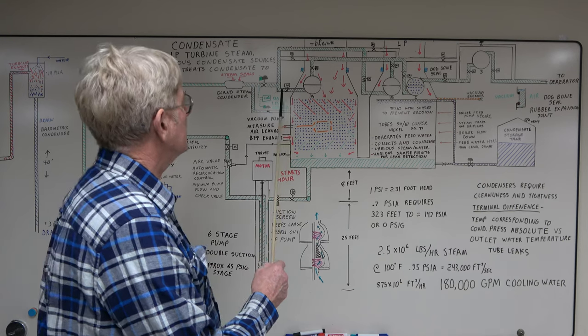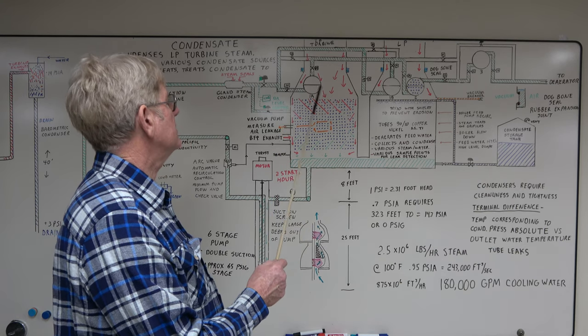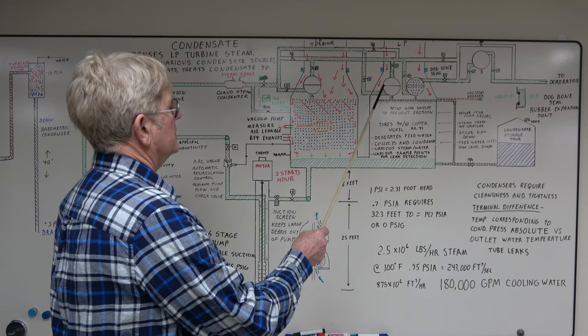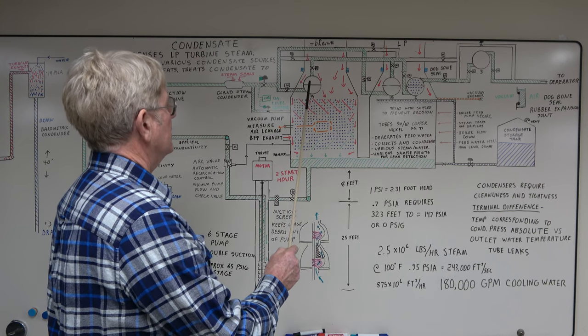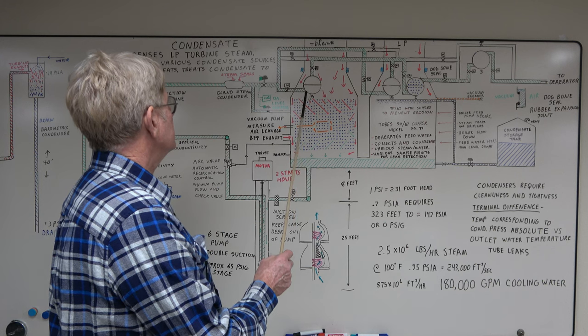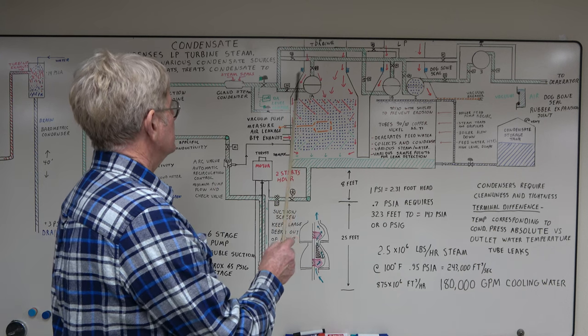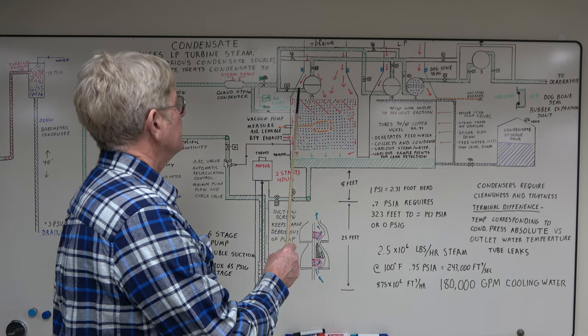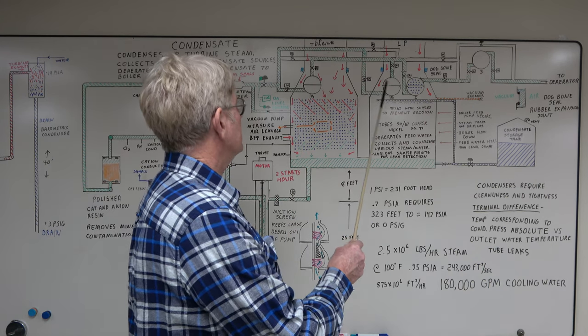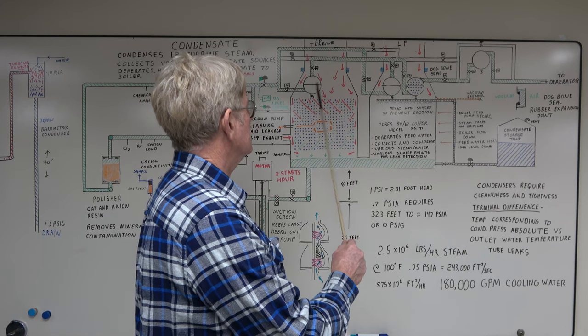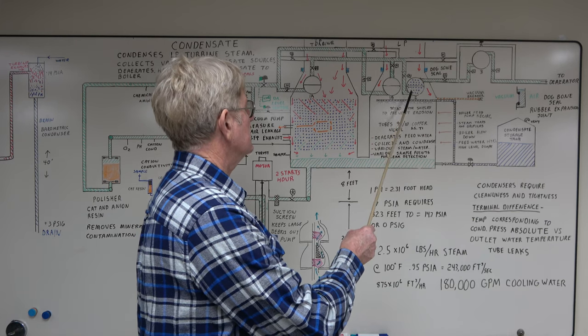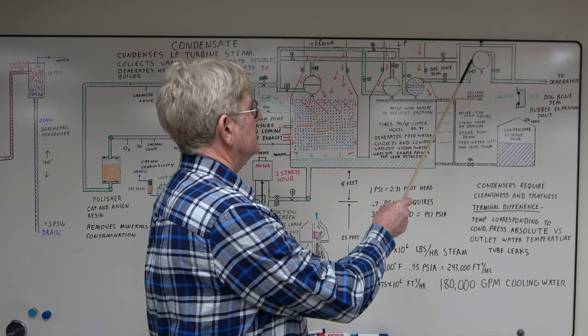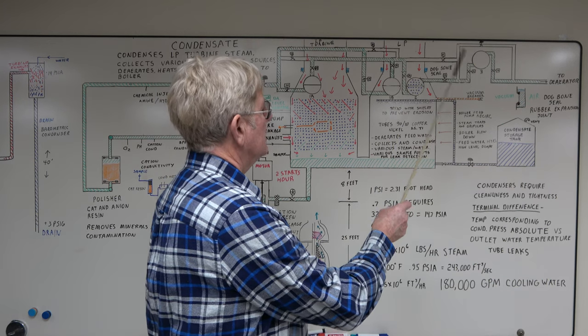From here, it goes to the low pressure feed water heaters. These are condensing steam from the low pressure turbines. These three are actually inside the shell of the condenser. You got one A, one B. These two come off the same stage of each turbine. Then feed water heater 2, it's a little higher stage up. Then it goes to feed water heater 3 and to the deaerator.